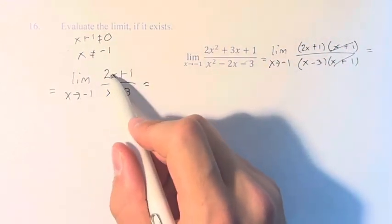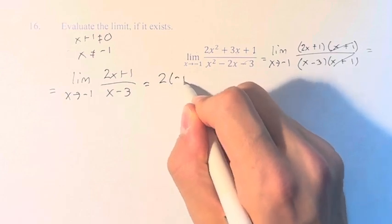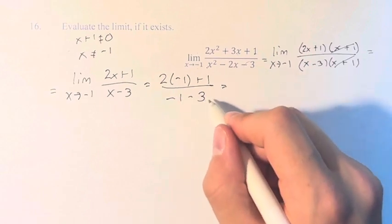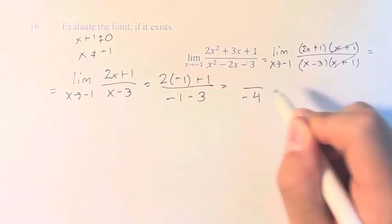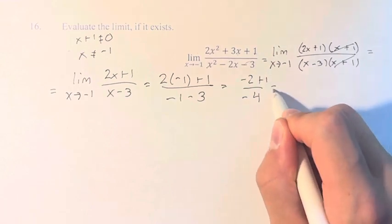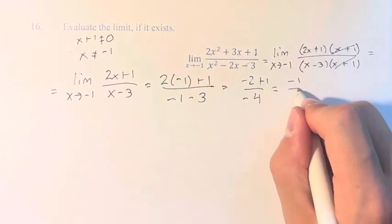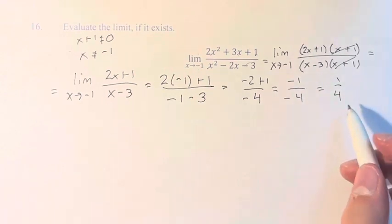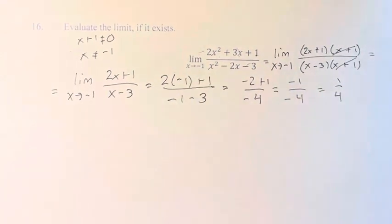We can therefore plug in negative 1. 2 times negative 1 plus 1 over negative 1 minus 3, because we are no longer dividing by 0, we are dividing by negative 1 minus 3, which is negative 4. On top, we have 2 times negative 1, which is negative 2, plus 1. Negative 2 plus 1 is negative 1 over negative 4, which is equal to 1 over 4, and therefore the value of this limit is equal to 1 over 4.